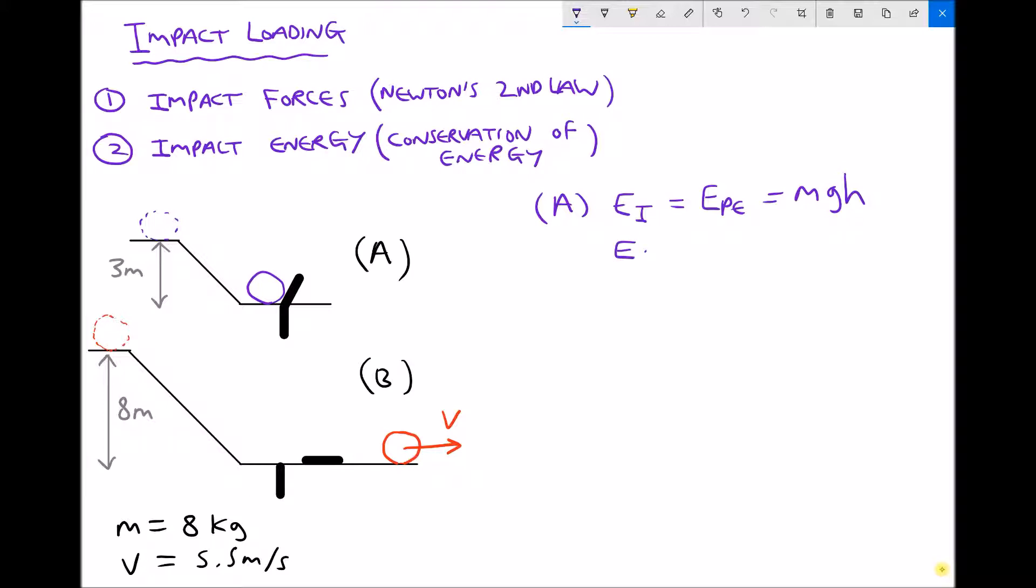That's also going to equal our impact energy. The mass of the object in this case is 8 kilograms, gravity is 9.81, and in scenario A our height is three meters. Therefore the impact energy in scenario A equals 235.44 joules.